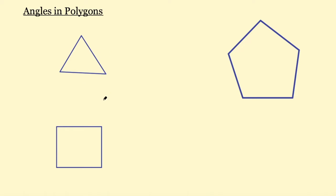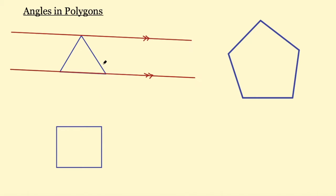If we look at this triangle here, we can draw two parallel lines so that one line goes through two of the points in the triangle and the second line goes through the other point in the triangle. Looking at the angles, we know our parallel line facts, and we know that this angle here is equal to the alternate angle on the top here — so those two red angles are equal as they're alternate. And we know the same on this side, so this angle in here will be equal to this one up here, as they're also alternate angles.